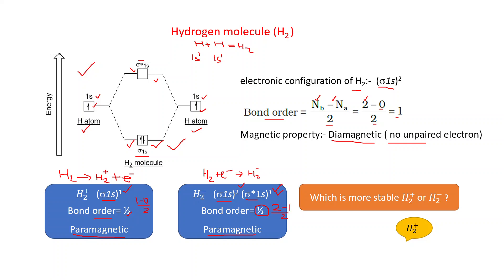Both H₂⁺ and H₂⁻ have a bond order of 0.5. However, H₂⁺ is more stable. In H₂⁻, there is one electron in the anti-bonding molecular orbital which destabilizes it, while in H₂⁺ there is no electron in the anti-bonding molecular orbital — that is why H₂⁺ is more stable.